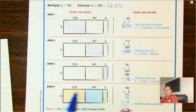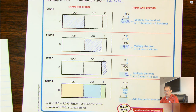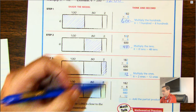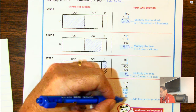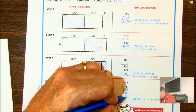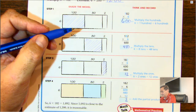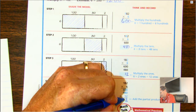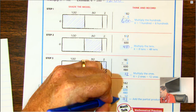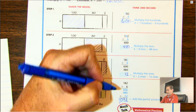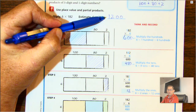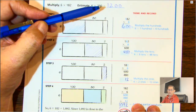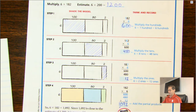Here would be the shaded areas in the whole model. Once you have your partial products, we're going to add them up: 2 plus nothing plus nothing is 2; 8 and 1 is 9; and 6 and 4 is 10. So we have a total of 1,092, which is close to our estimate of 1,200. So that's a reasonable answer.